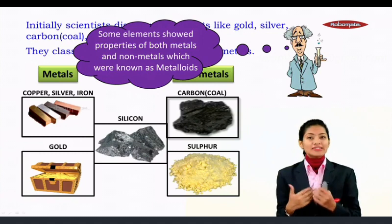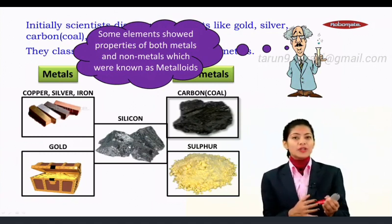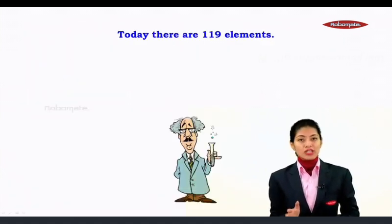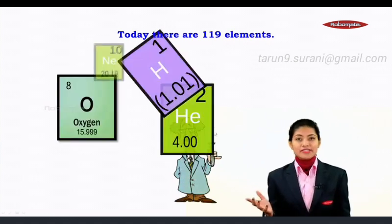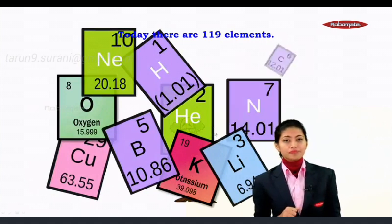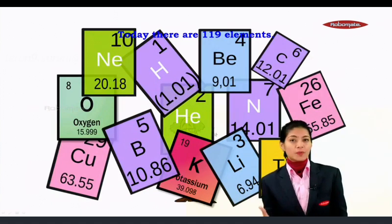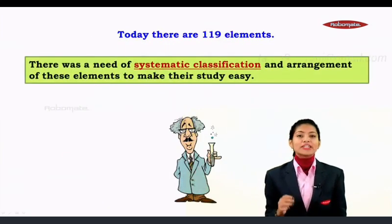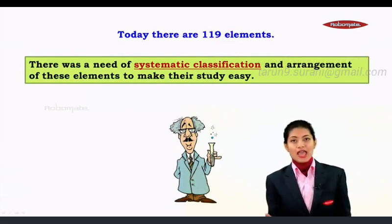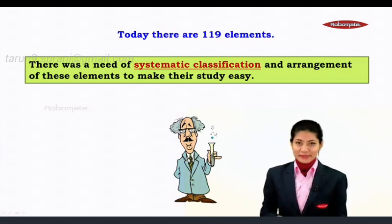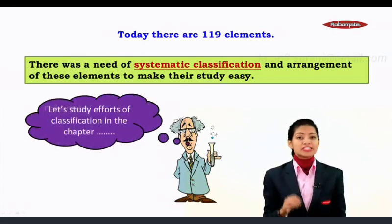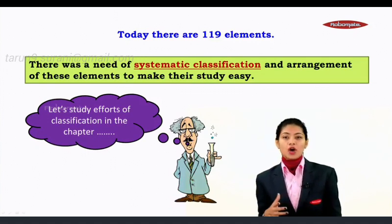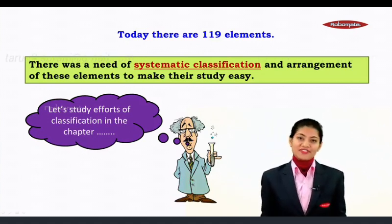Scientists came to the realization that we need a proper arrangement, a proper classification and study of elements. In nature, as of now, there are a total of 119 elements, some of which you can see here. These 119 elements show various and different properties, and understanding them was very important. That is why there was a need for systematic classification and arrangement of these elements to make their study easy. This is what we are going to study in this chapter — periodic classification of elements.